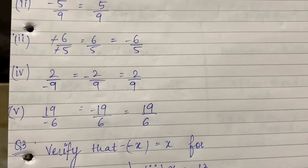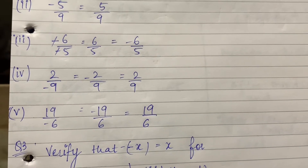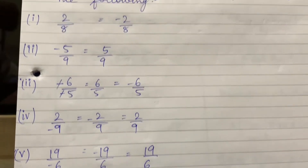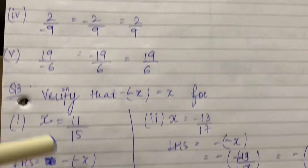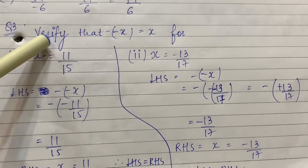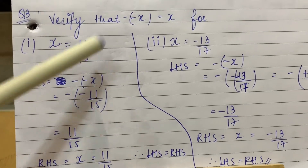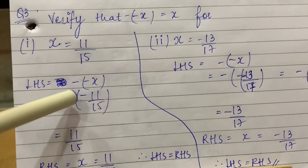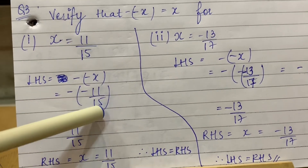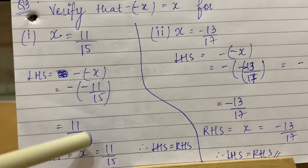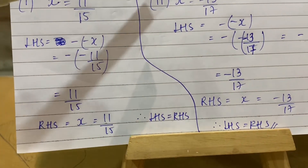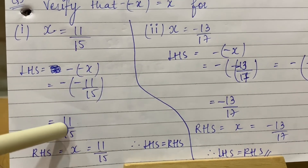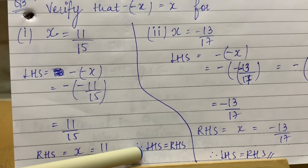Now we have to verify that minus minus x is equal to x — meaning prove LHS equals RHS. Every time the value of x is given and we have to prove LHS equals RHS. Here x is equal to 11 upon 15. LHS is minus minus x, so minus minus of 11 upon 15. Minus minus becomes plus, so it is simply 11 upon 15. RHS is x, which equals 11 upon 15. Hence LHS equals RHS.